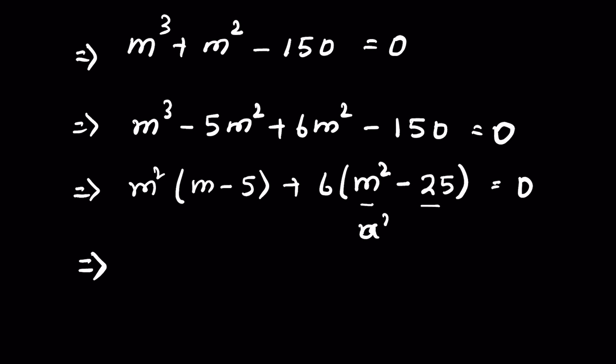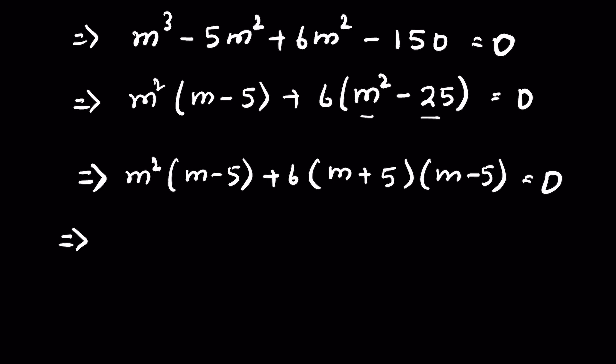Now m² - 25 is in the form of a² - b². Since 25 is 5², we can write it as (m + 5)(m - 5). So we have m²(m - 5) + 6(m + 5)(m - 5) = 0.